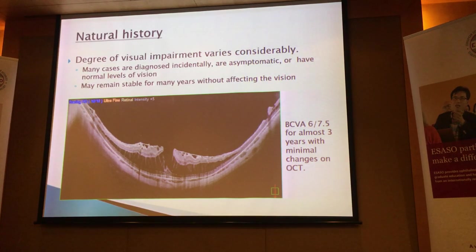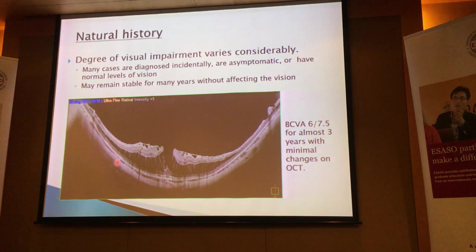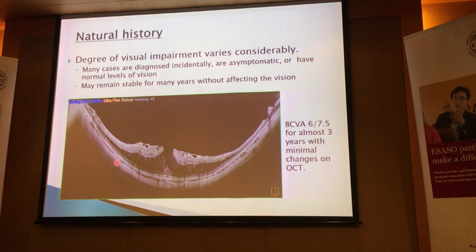Most people are completely asymptomatic. If they are symptomatic, normally the vision is within one to two lines of what we would call normal vision — 6/6. Even in a case like this with significant changes on the OCT, visual acuity can be 6/7.5. In this case, the patient's vision was 6/7.5 with very little change on OCT for almost three years.